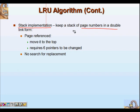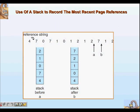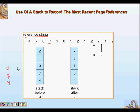The next implementation is a stack implementation: keep a stack of page numbers in a doubly linked list form. If a page is referenced, move it to the top — this requires no search for replacement. Looking at the reference string with five frames of main memory: page four comes in and is pushed onto the stack, then seven is pushed, then zero is pushed. Seven comes again — since it's already there, it's moved to the top, making the stack: four, zero, seven.